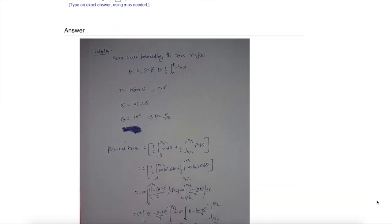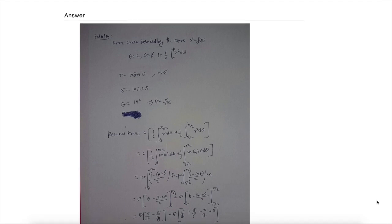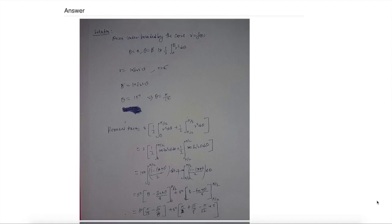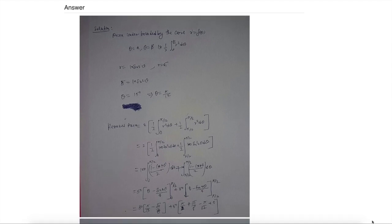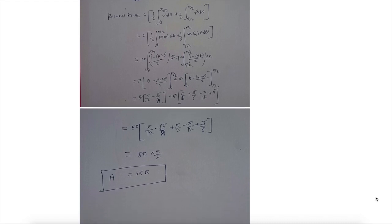To find the area of anything bounded by the curve, we can use the formula R equals F of theta. After plugging this into our integral equation, we can find the required area. The area inside the rose is equal to 25 pi.